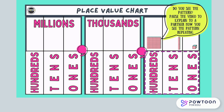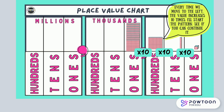Do you see the pattern? Pause the video to explain to a partner how you see the pattern repeating on this place value chart. Look over to the far right — we see the ones place in the beginning. Every time we move to the left, the value increases 10 times. 1 times 10 equals 10, and we can see 10 in the tens place. 10 times 10 equals 100, and we can see 100 squares in the hundreds place. 100 times 10 equals 1,000, and we can see 1,000 little tiny blocks stacked up in the thousands place. Pause the video to continue this pattern.